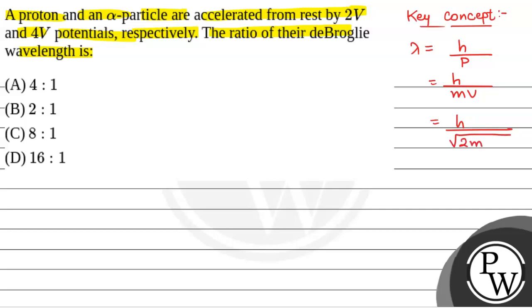So de Broglie wavelength will be equal to h by root under 2m into kinetic energy. And we know that kinetic energy is equal to q into v, where q is the charge on the particle and v is the potential by which it is accelerated.